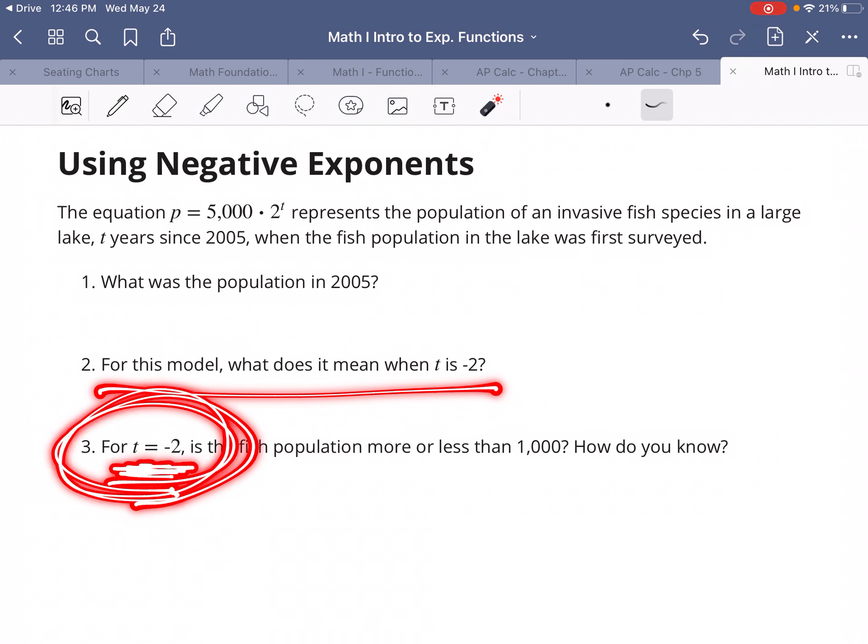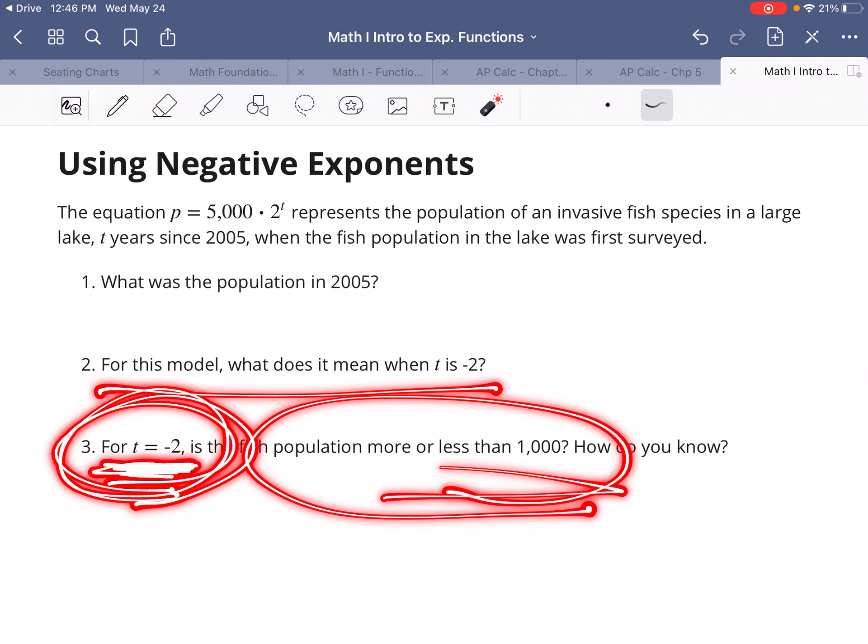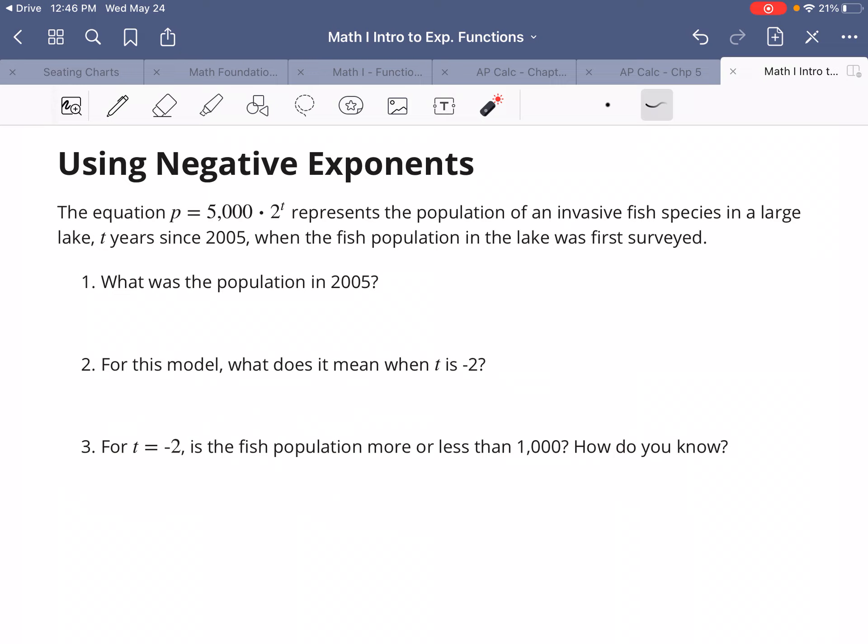T equals negative 2. What year would that be, and what would that say about the population of fish if our population is growing over time? Are we going forwards in time or backwards in time? Would it be growing or getting smaller? I hope this helps. Let me know if you have any questions.